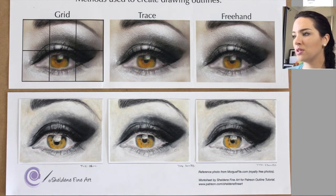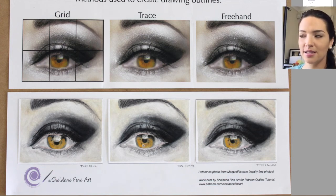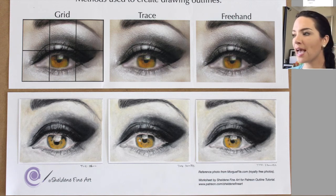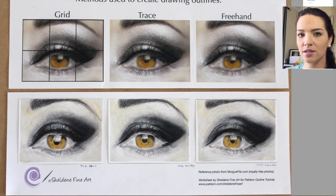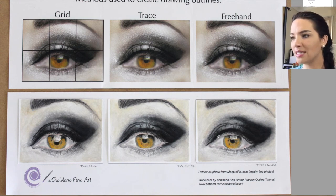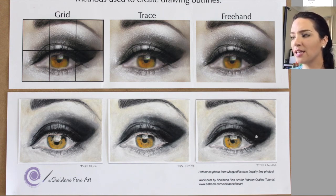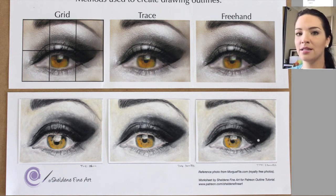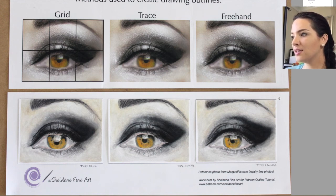When it comes to deciding which outline I prefer to use, I do prefer to trace. The main reason is that it saves so much time and it is the most accurate way to get your outline. Freehand takes me the longest because I'm focusing on and observing so many different areas, trying to locate them all correctly. I'm happy with how accurate I can get a freehand, but the only reason I don't freehand a lot is because of the time it takes — it is a long process.